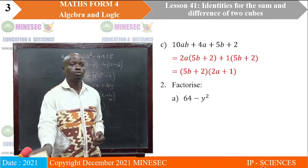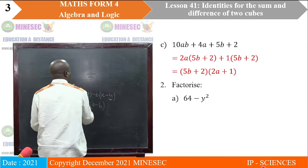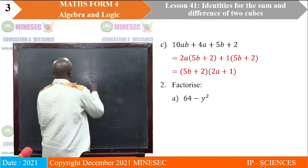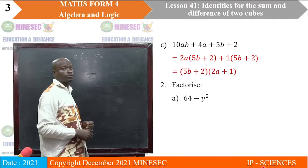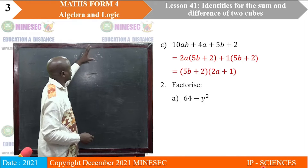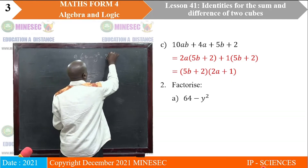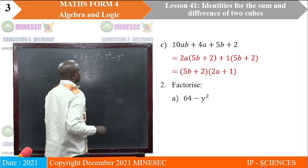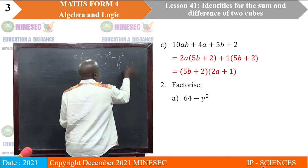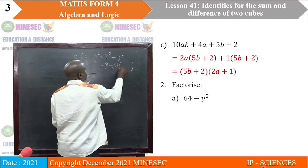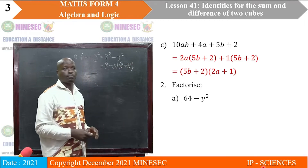The next question is to factorize 64 minus Y squared. In the last lesson, we said that an expression of this form is what we call the difference of two squares. This is already a perfect square expression. 64 can be written as 8 squared, so we have 8 squared minus Y squared. We just write two brackets: 8 minus Y into 8 plus Y. That's how we factorize the difference of two squares.